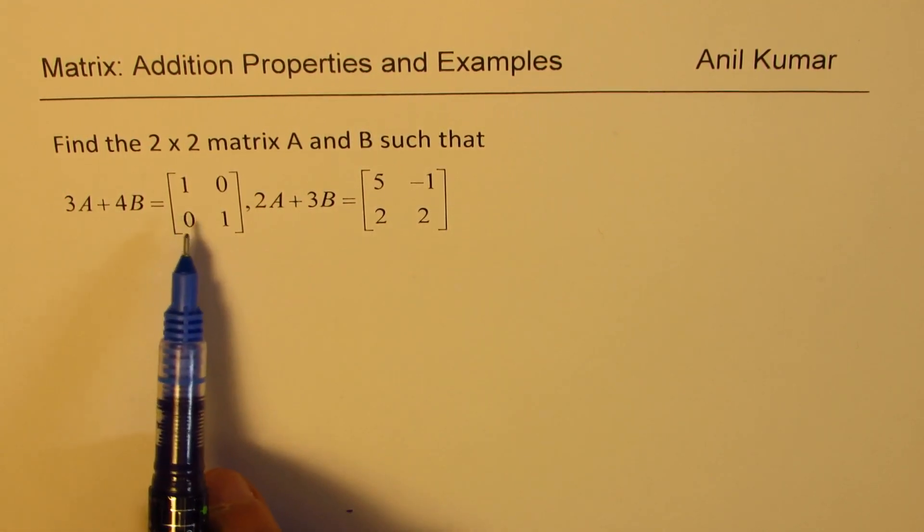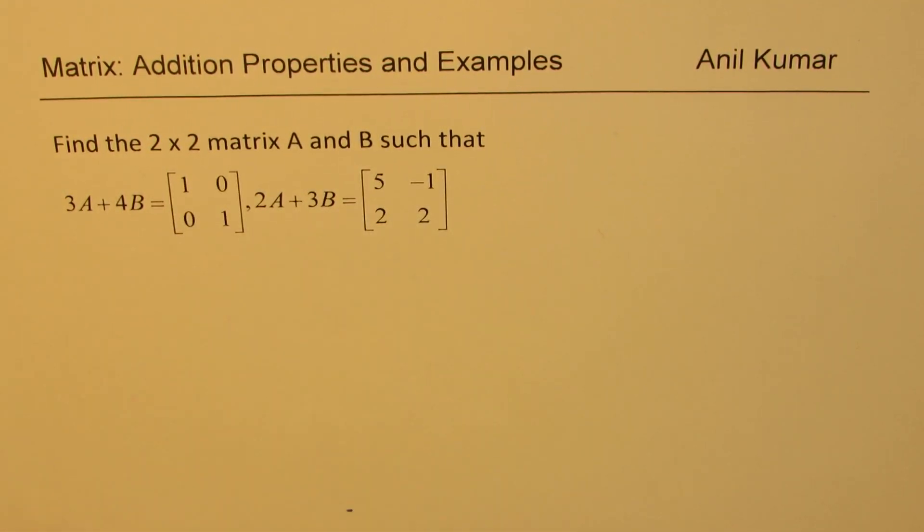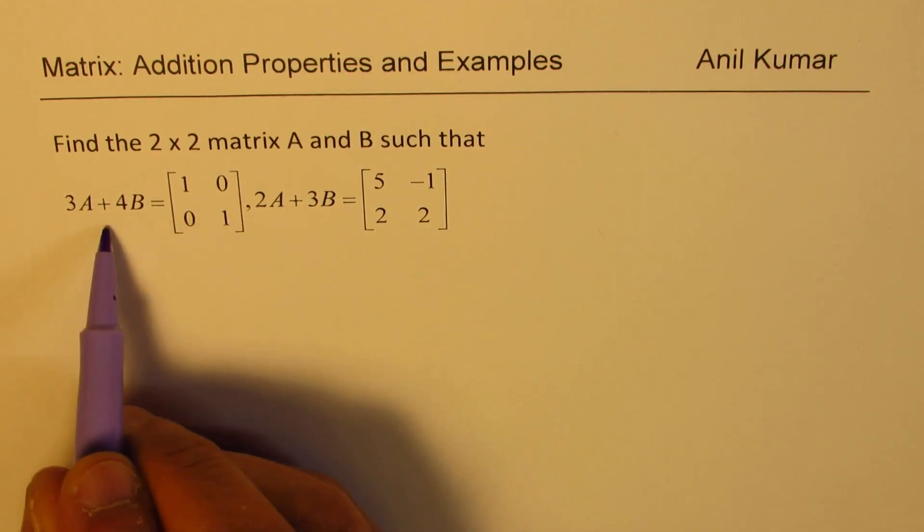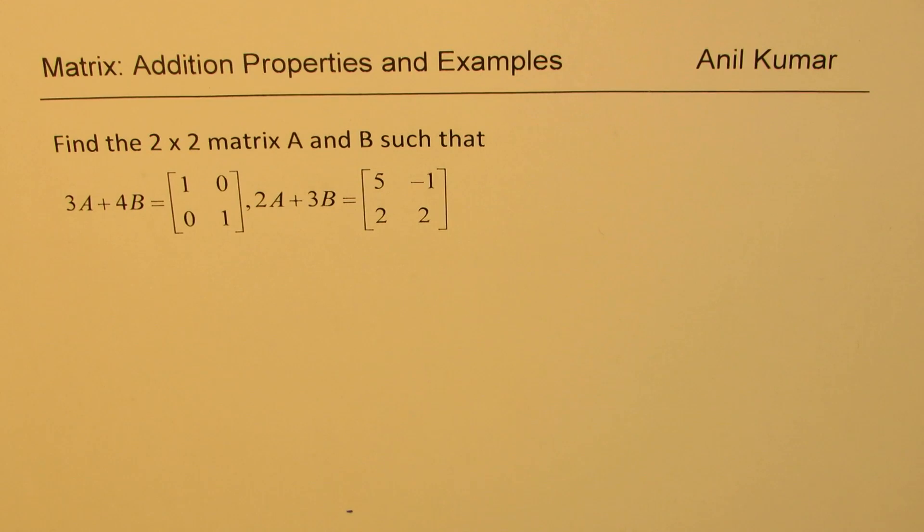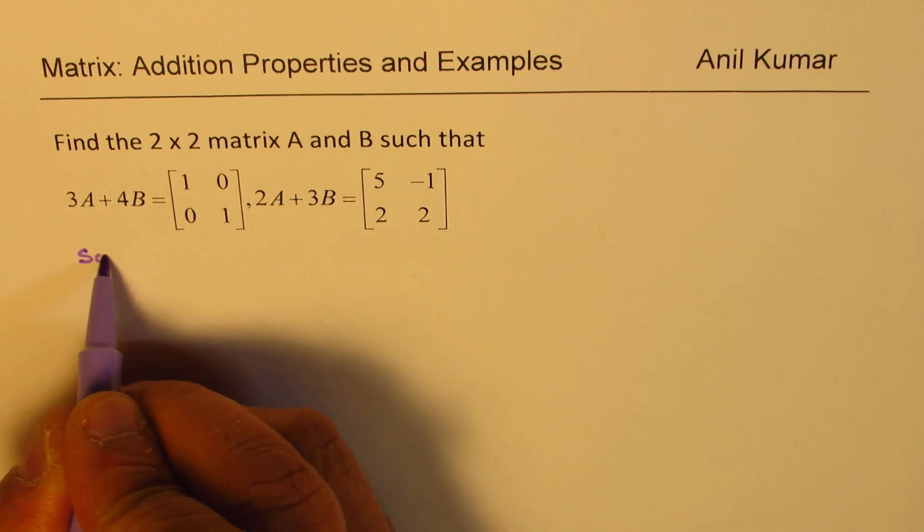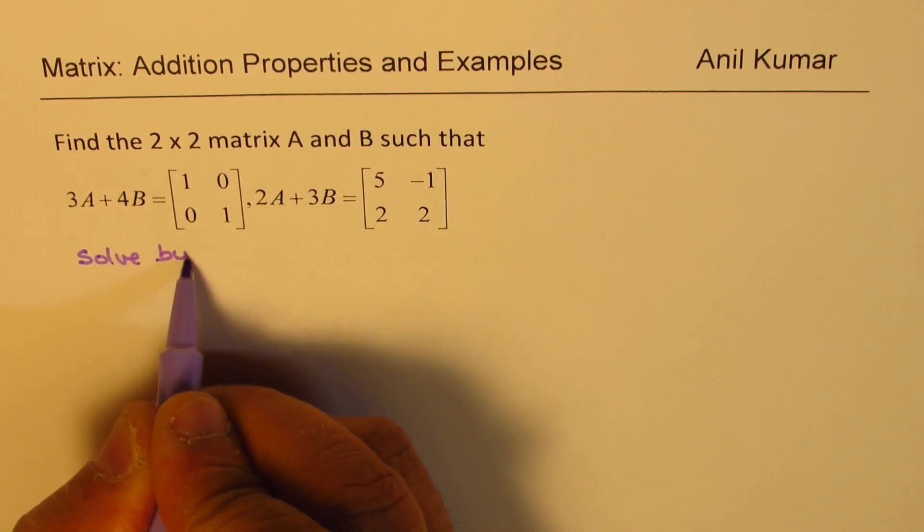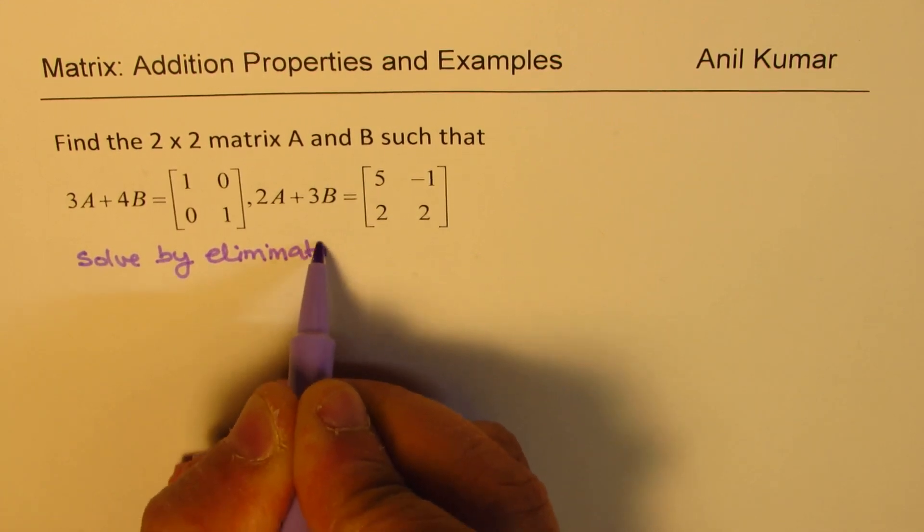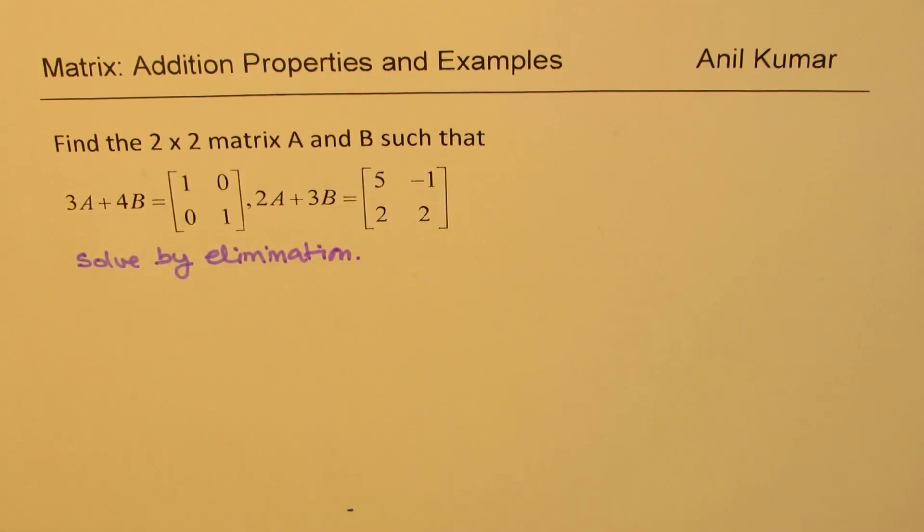3A plus 4B is given to us. 2A plus 3B is given to us. What should we do? Well, the first step should be that we should ensure that any one of their corresponding coefficients become similar so that we could add and subtract and eliminate. So the idea is to solve by elimination.